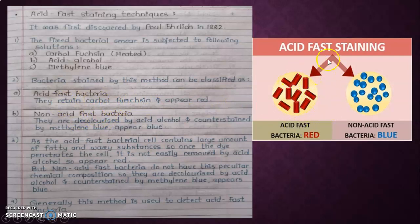Bacteria can be classified as acid-fast and non-acid-fast bacteria. Acid-fast bacteria retain carbol fuchsin and appear red in color. Non-acid-fast bacteria are decolorized by acid alcohol and counterstained by methylene blue, appearing blue in color. The acid-fast bacterial cell contains large amounts of fatty and waxy substances, so once the dye penetrates the cell it is not easily removed by acid alcohol, so it appears red in color.